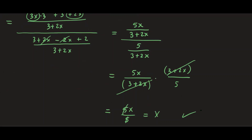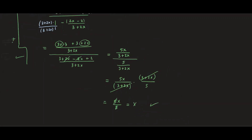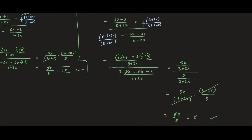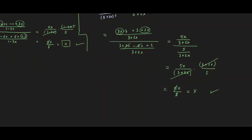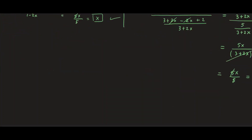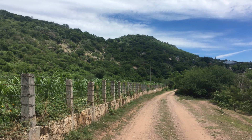So you see how doing the composition in both directions gives us x. That was the idea. Because both directions gave us x, we can say f and g are inverses of each other. That's the conclusion you'll draw using the inverse function property.